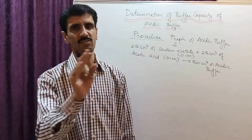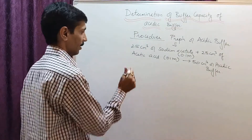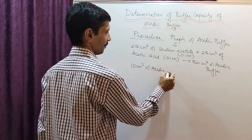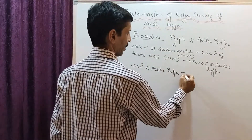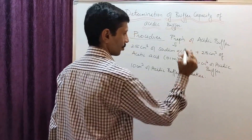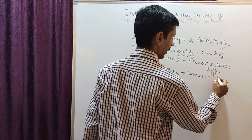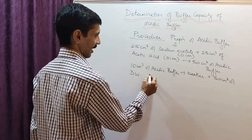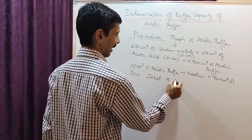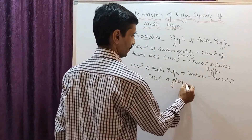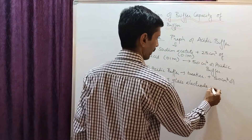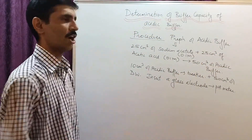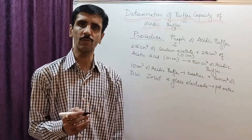This is step one. Next, take 10 cm³ of the acidic buffer in a beaker, to which we add approximately 50 cm³ of distilled water. Then insert a glass electrode which is connected to a pH meter, because this entire experiment is based on noting down pH values.